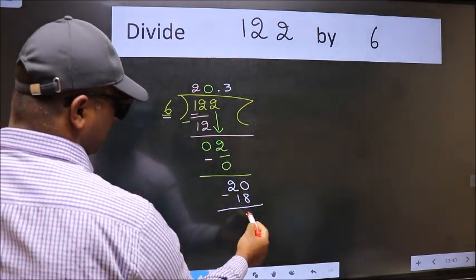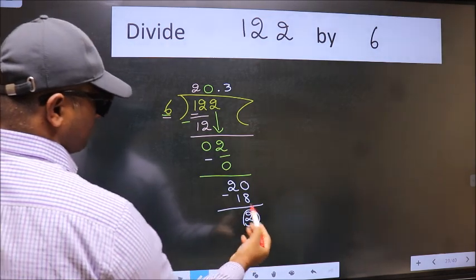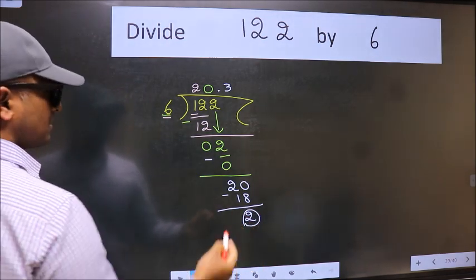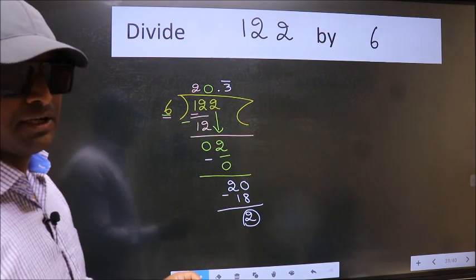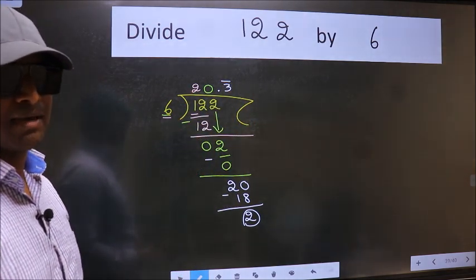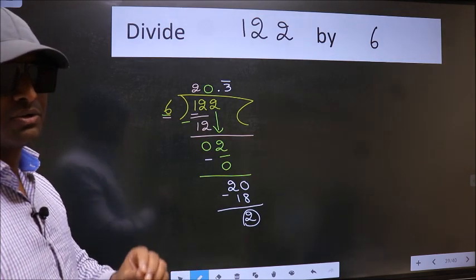Now we subtract. We get 2 again. That means we get a bar on this number. Did you understand where the mistake happens? You should not make that mistake.